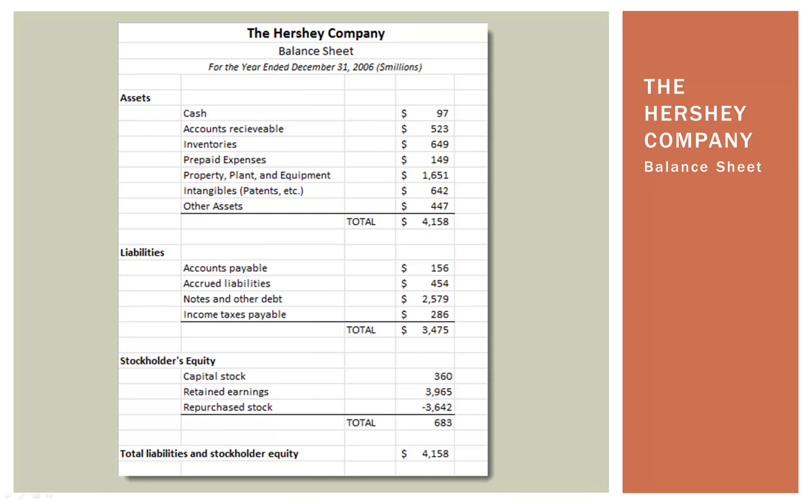If we go back, we can see how it all lines up. Writing A equals L plus E, it would balance out: $4,158,000,000 on the asset side and $4,158,000,000 on the right-hand side. That is, by definition, the balance sheet.